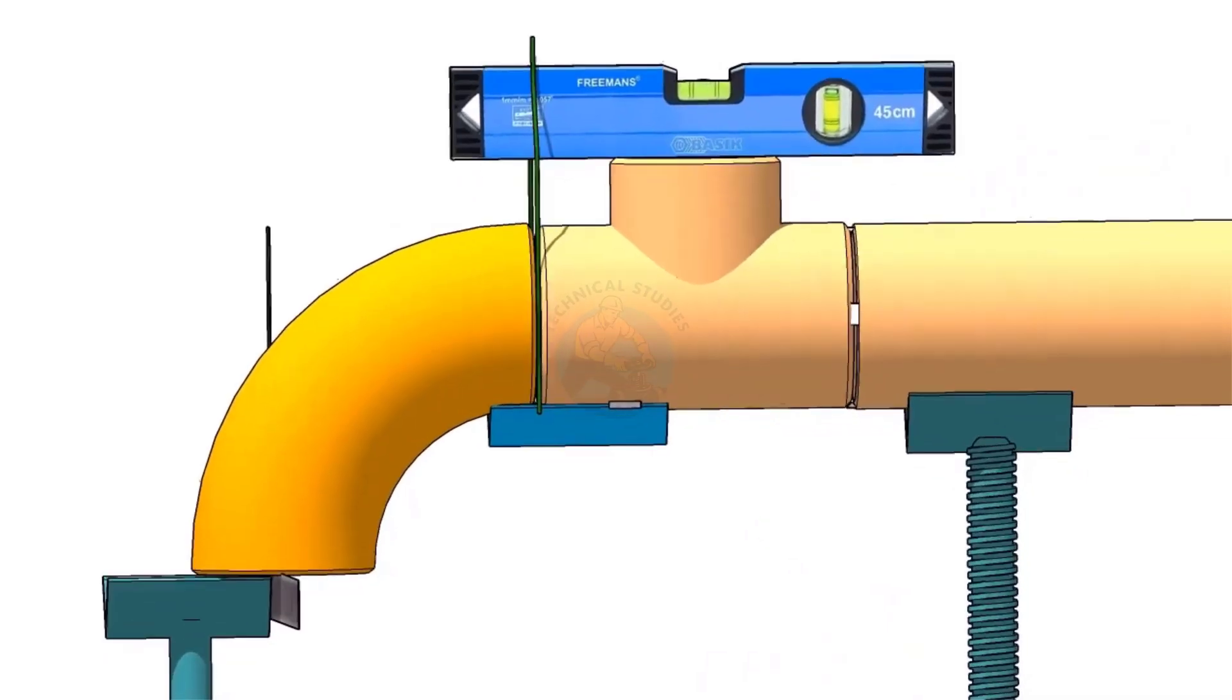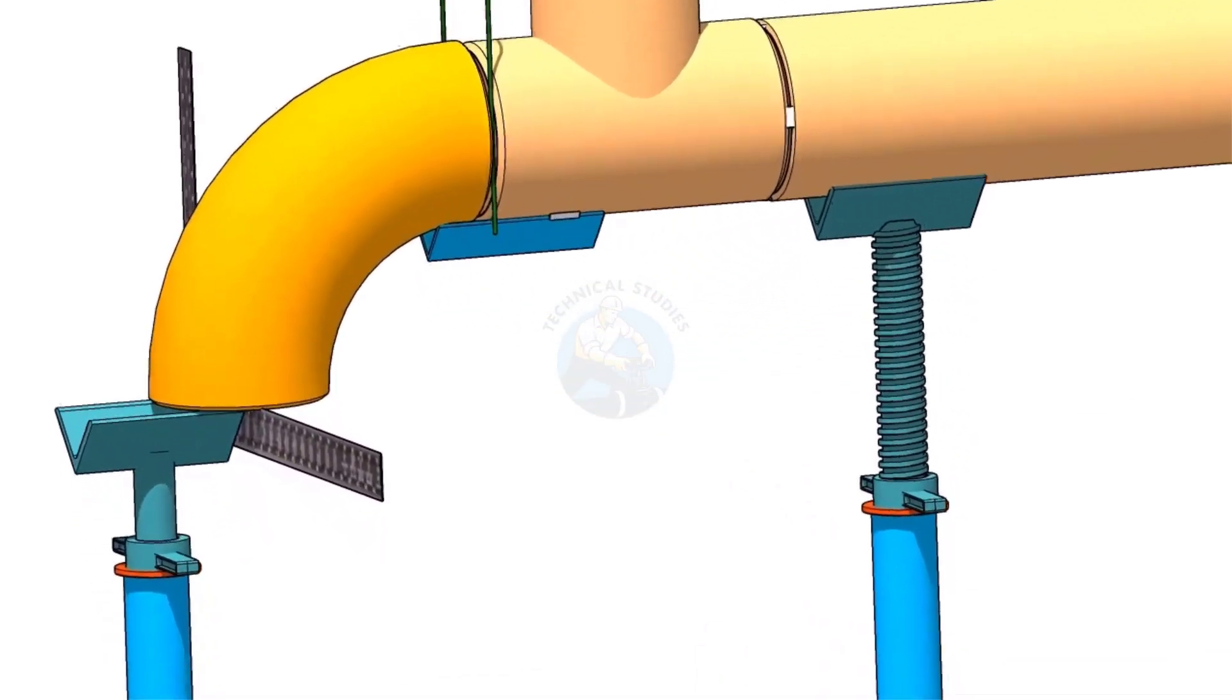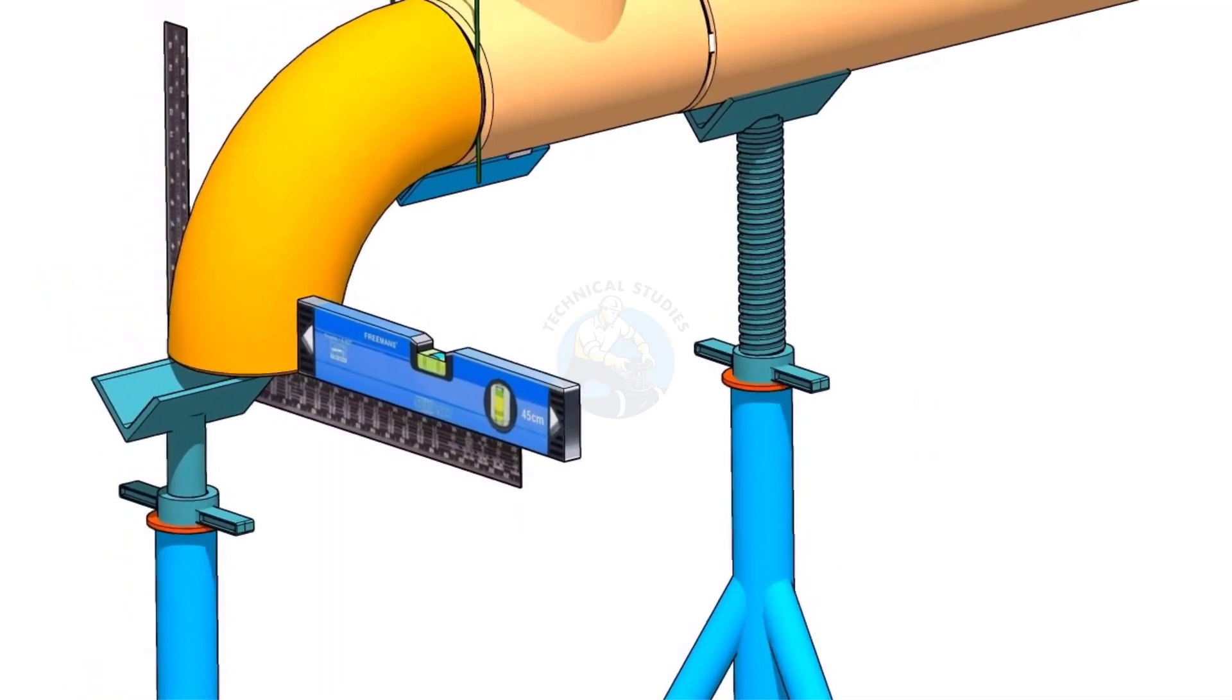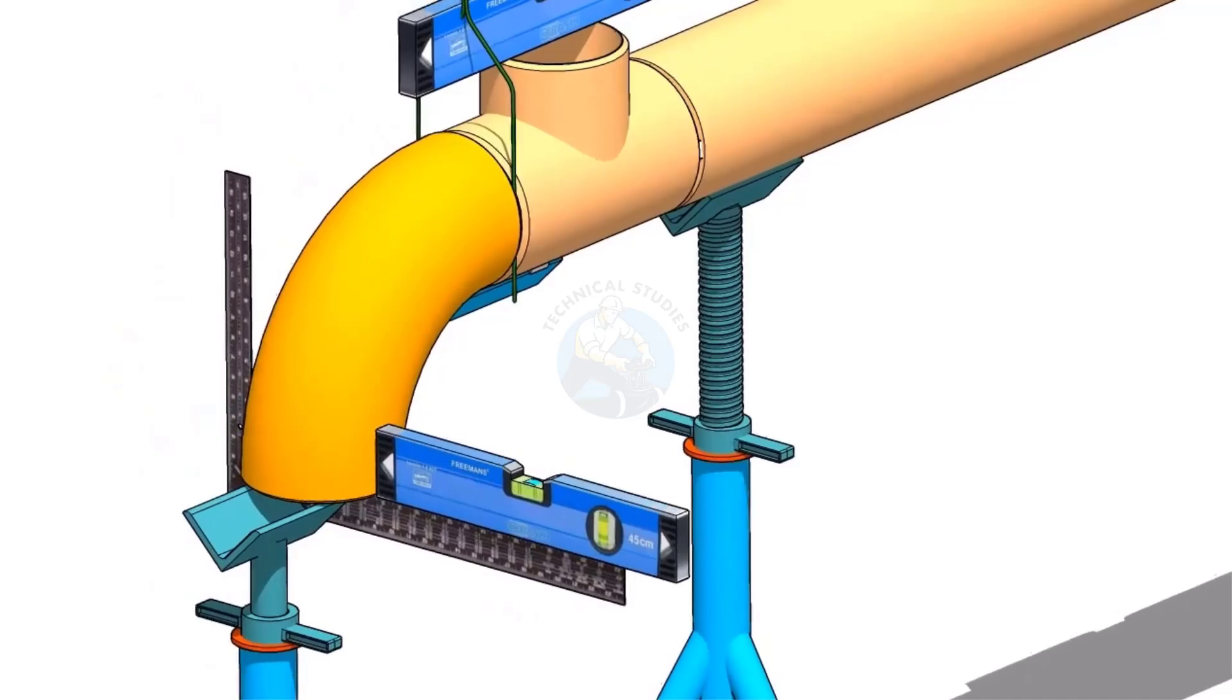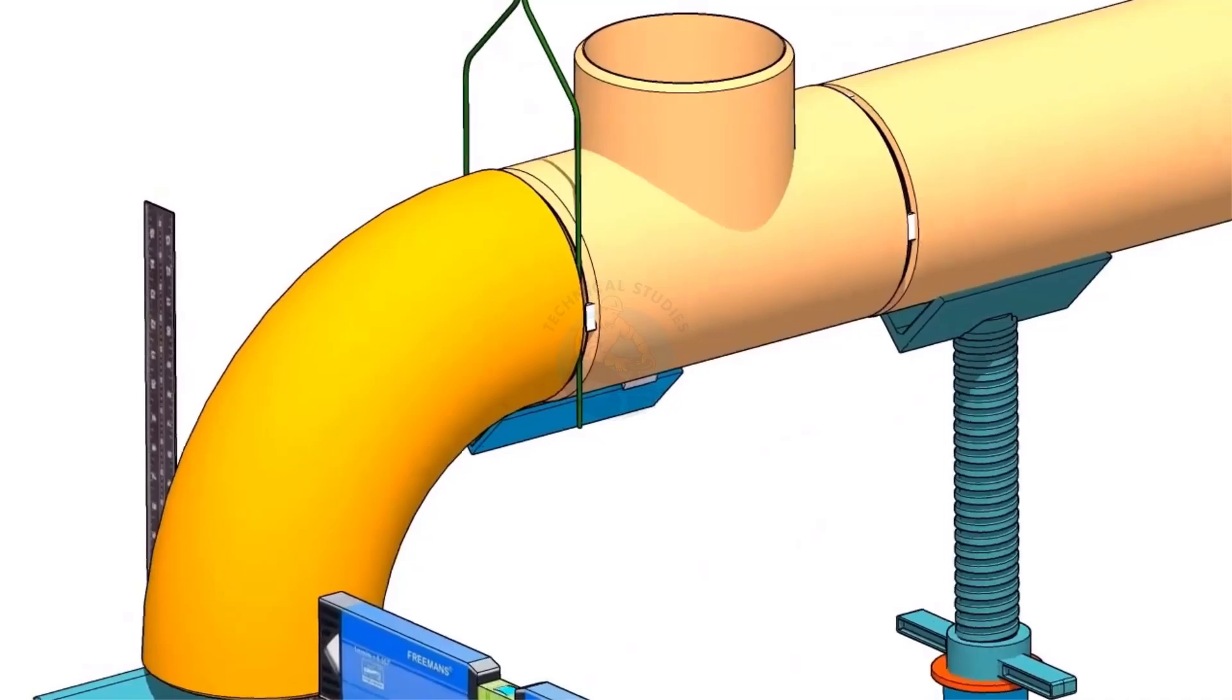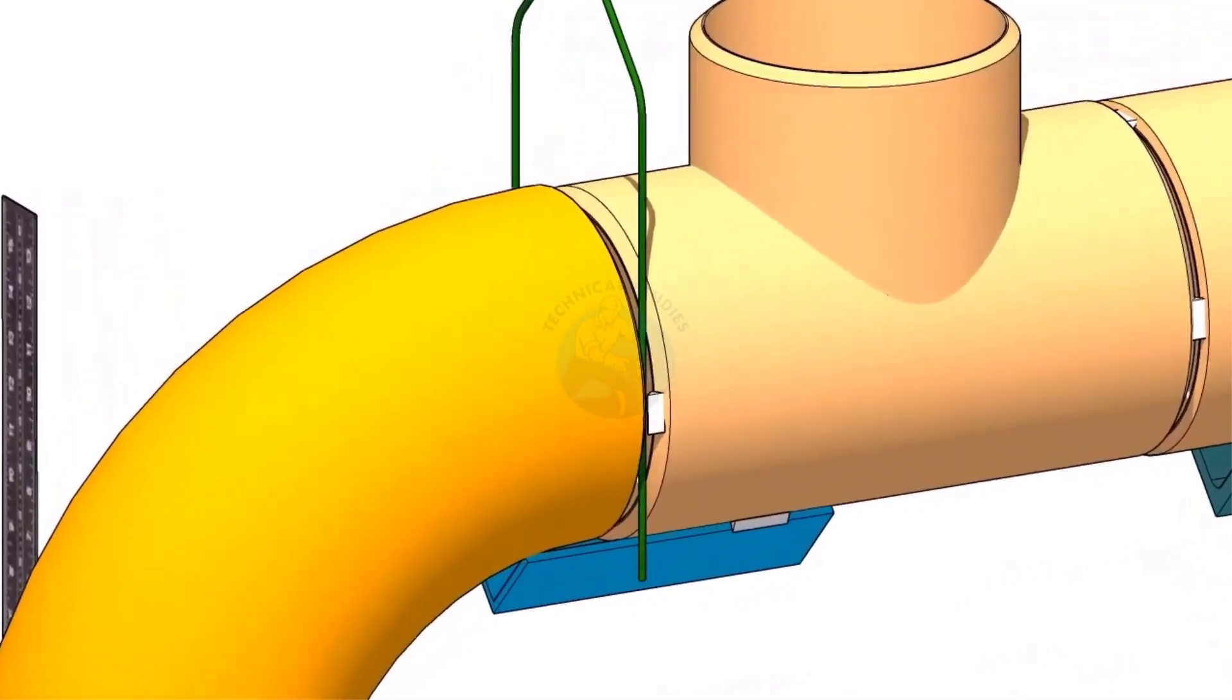Hold a large right angle or a straight edge below the elbow face firmly. Put a level bottle on the right angle as shown. Rotate the elbow to make the face level. Tack weld on both sides of the elbow with the tee.